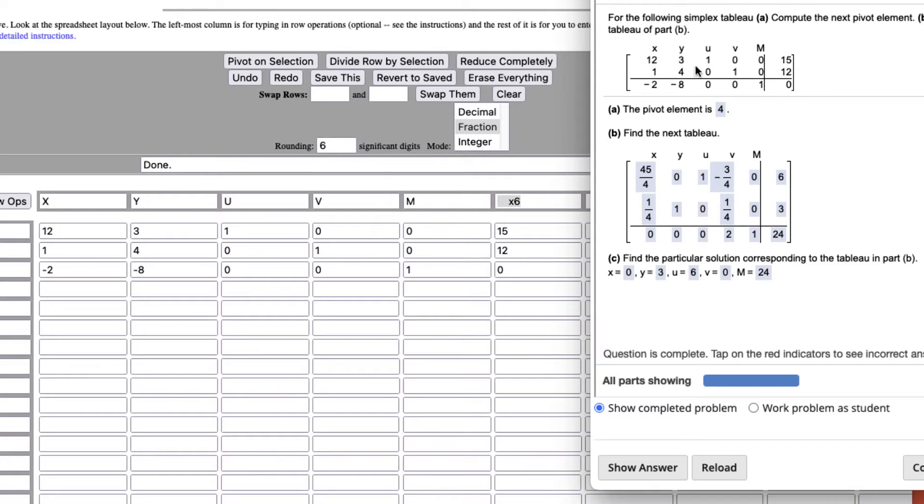Then we look at the ratios of these guys. So 12 divided by 4 ratio. It's 3. 15 divided by 3 is 5. We take the smaller of those two. So 3 is smaller, and negative 8 is small. So they cross right here at the 4. That's the pivot element.